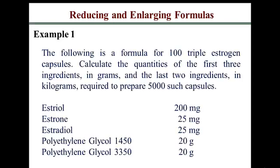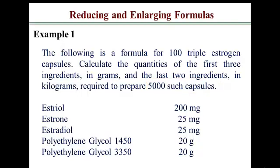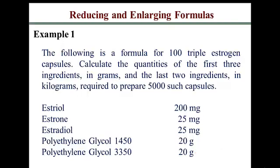Now let's look at what you may normally encounter, where all components are given by weight in grams or milligrams. This example states you have a formula for 100 triple estrogen capsules. You are to calculate quantities of the first three ingredients in grams and the last two in kilograms, required for 5,000 such capsules. You have estriol, estrone, and estradiol at 200, 25, and 25 milligrams respectively, and polyethylene glycols at 20 grams each. You're scaling up, obviously.